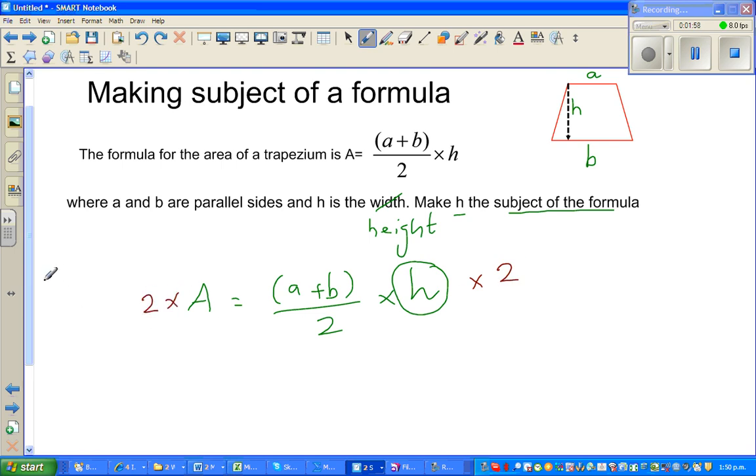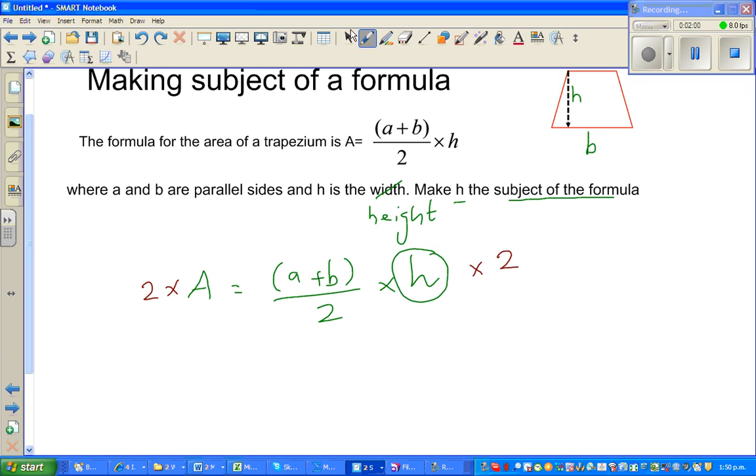(a plus b) times h, and the 2s will get cancelled. That's what we did - the 2s will cancel. So now we are left with 2A equals (a plus b) times h. Now I want to cancel this (a plus b) from this side.